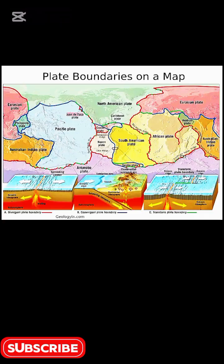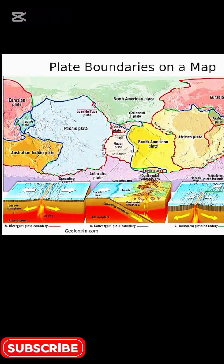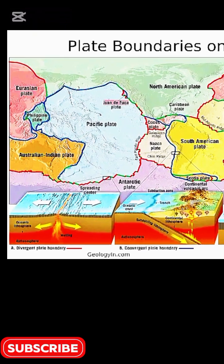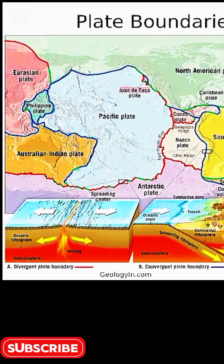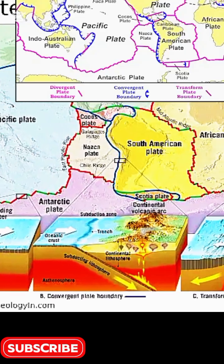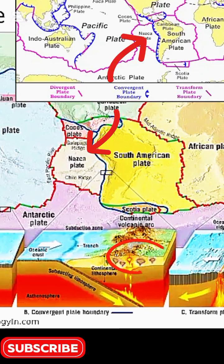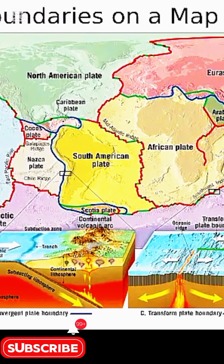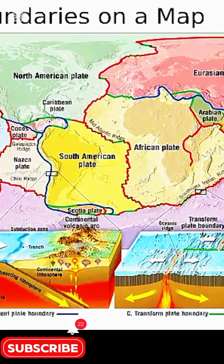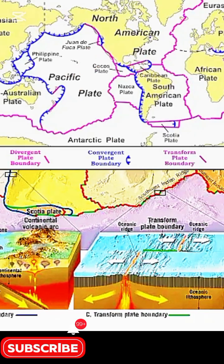Now let's connect this to the real world using different maps. Where the plates are diverging, like at spreading centers such as the Mid-Atlantic Ridge, new crust forms. Where they converge, like the Nazca plate subducting under South America, trenches and volcanoes erupt. And where they slide, like the transform plate boundary near the Pacific plate, earthquakes shake the ground.